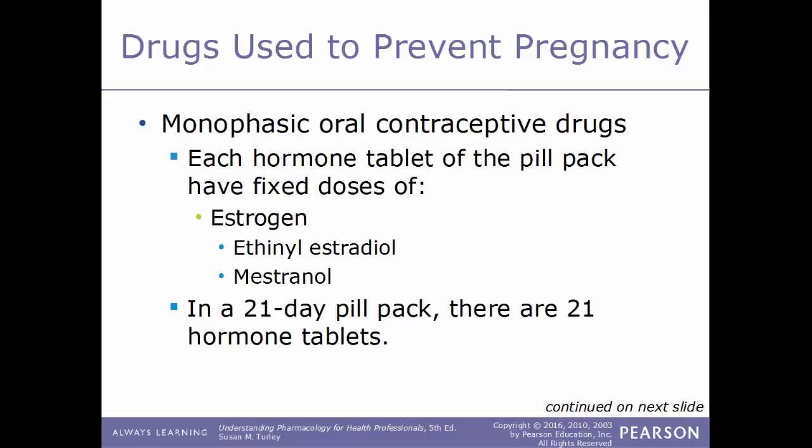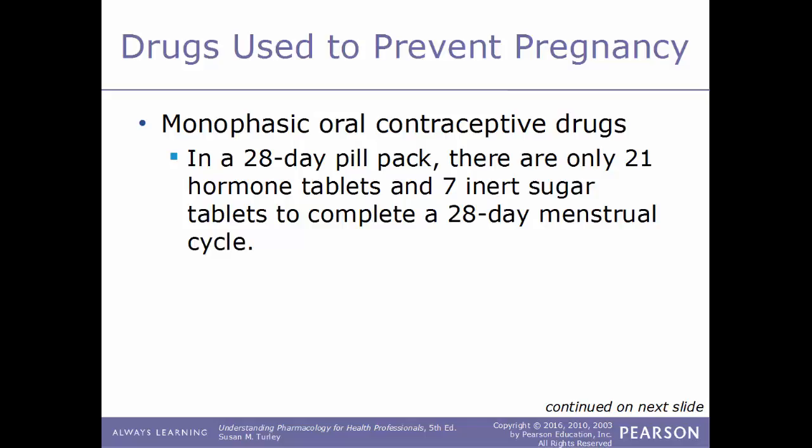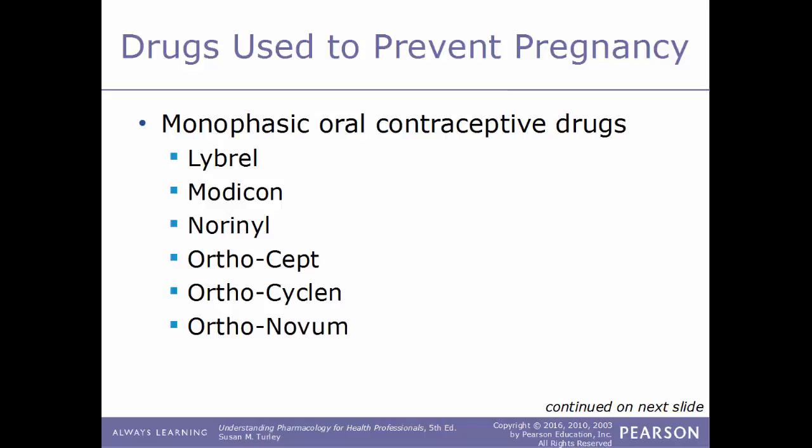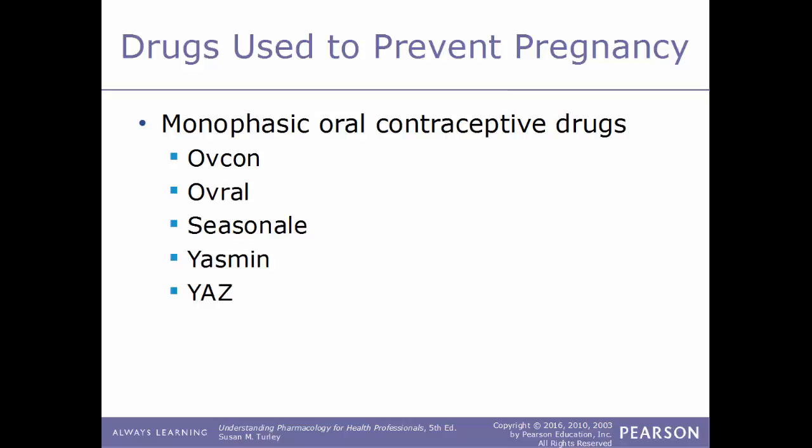In the 21-day pill pack there are 21 hormone tablets. In the 28-day pill pack there are 21 hormone tablets and 7 inert sugar tablets that complete a 28-day menstrual cycle. Some examples of monophasic oral contraceptive drugs include Brevicon, Demulen, Desogen, Loestrin, Lo-Ovral, Librel, Modicon, Norinyl, Orthocept, Ortho-Cyclen, Ortho-Novum, Ovcon, Ovral, Seasonale, Yasmin, and Yaz.